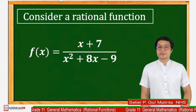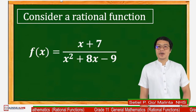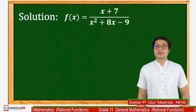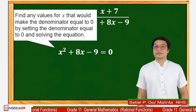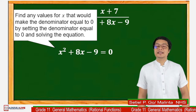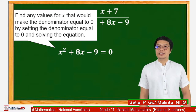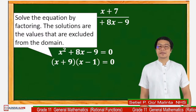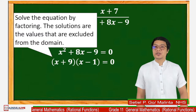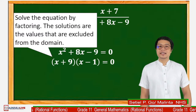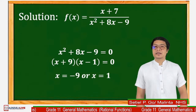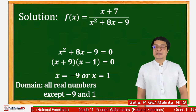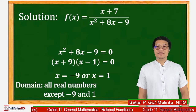Let's have another example: f(x) = x plus 7 over x squared plus 8x minus 9. We need to find any value of x that would make the denominator equal to 0 by setting x squared plus 8x minus 9 = 0. Solving by factoring: (x + 9)(x − 1) = 0, giving x = negative 9 or x = positive 1. Therefore, the domain is all real numbers except negative 9 and positive 1.